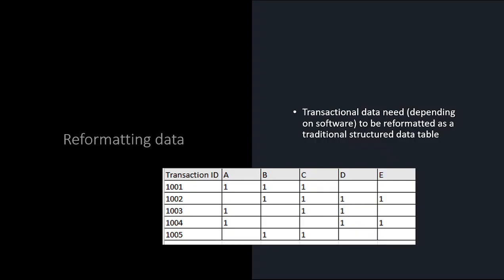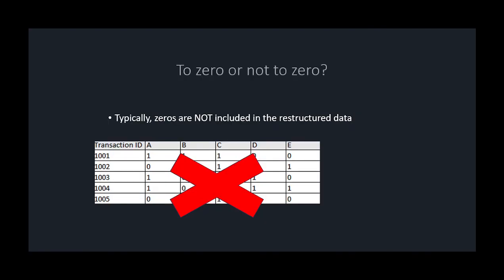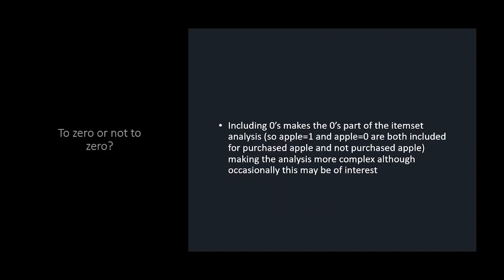You want to set up this dataset for association analysis. You can use Excel with if-then statements to create these flags, or if it's a small dataset, do it by hand. Don't put the zeros in. Including zeros means you analyze both bought and not bought, making your analysis way more complicated than needed. So just don't put them in.